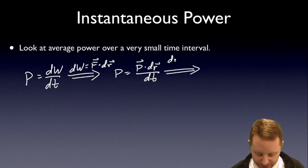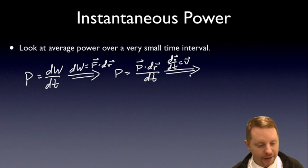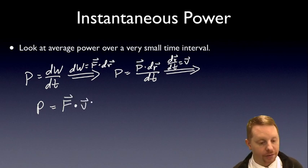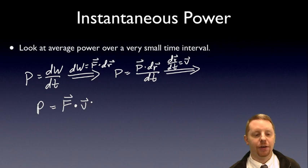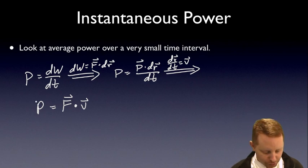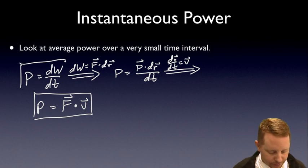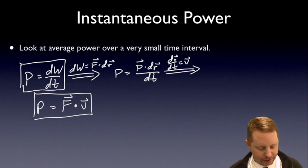So because dr dt is equal to velocity, we can then say that power is equal to force dotted with our velocity vector. And you may want to go back and go over our dot product video just as a refresher on those math skills, the scalar operation for multiplication of vectors. So power equals force dotted with velocity, or the rate at which work is done.